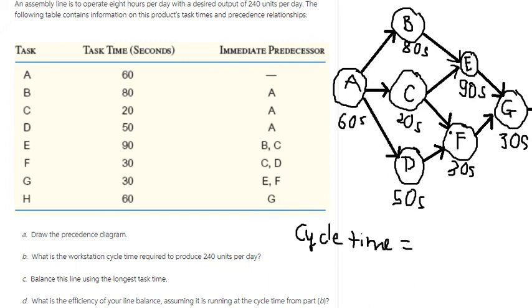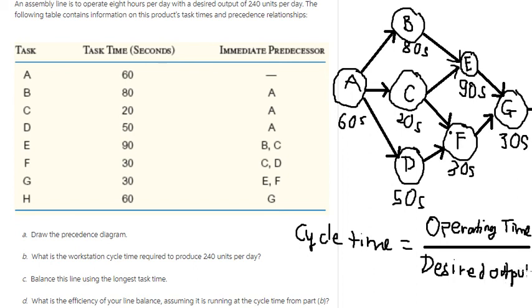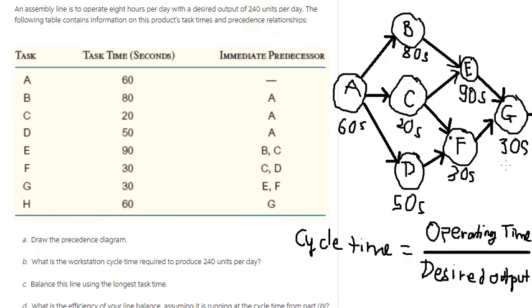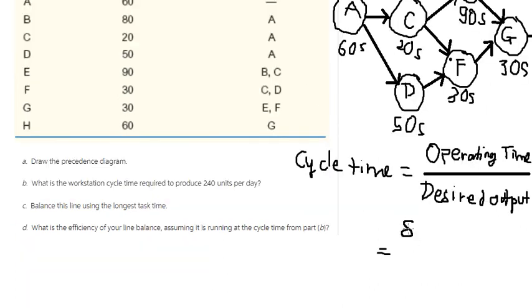Cycle time equals operating time divided by desired output. And we know that operating time we have 8 hours.